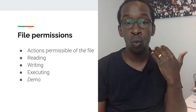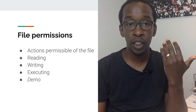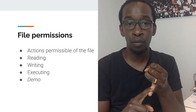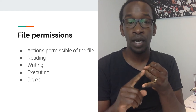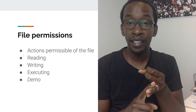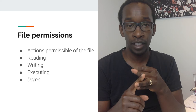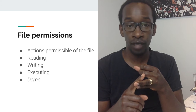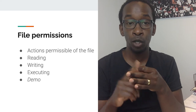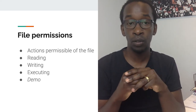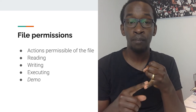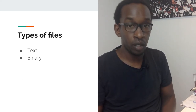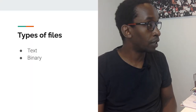Files have permissions that specify what is allowed on the file. There are three main permissions: read (read-only access), write (ability to modify the file), and execute (ability to run the file). Execute permissions only apply when the file content is executable — a program or script. Let's look at a demo of this in PyCharm.